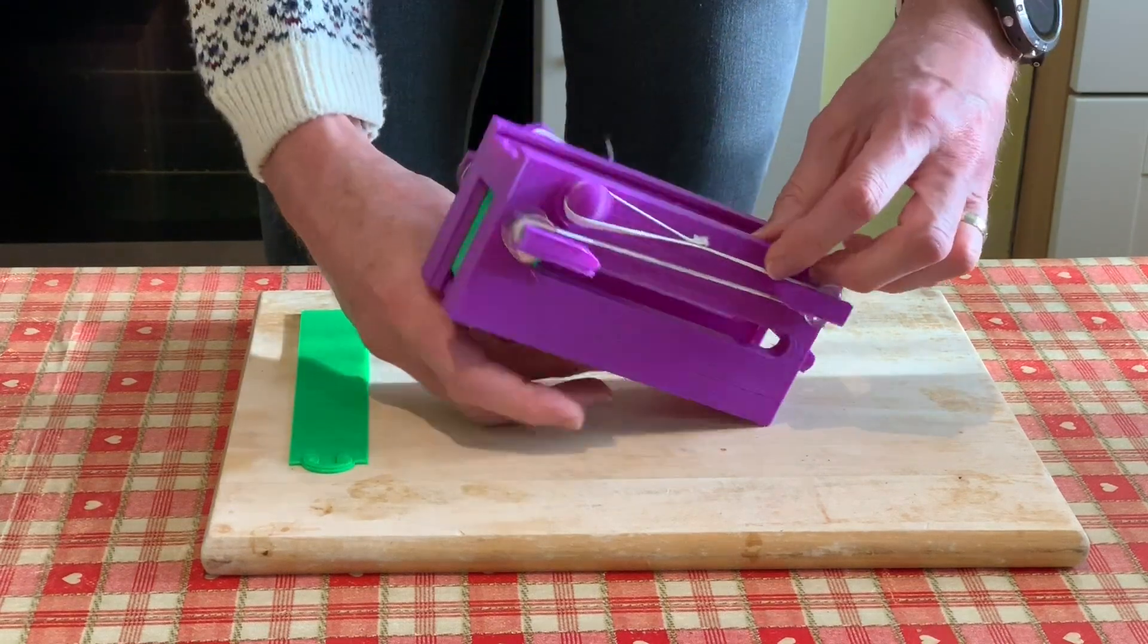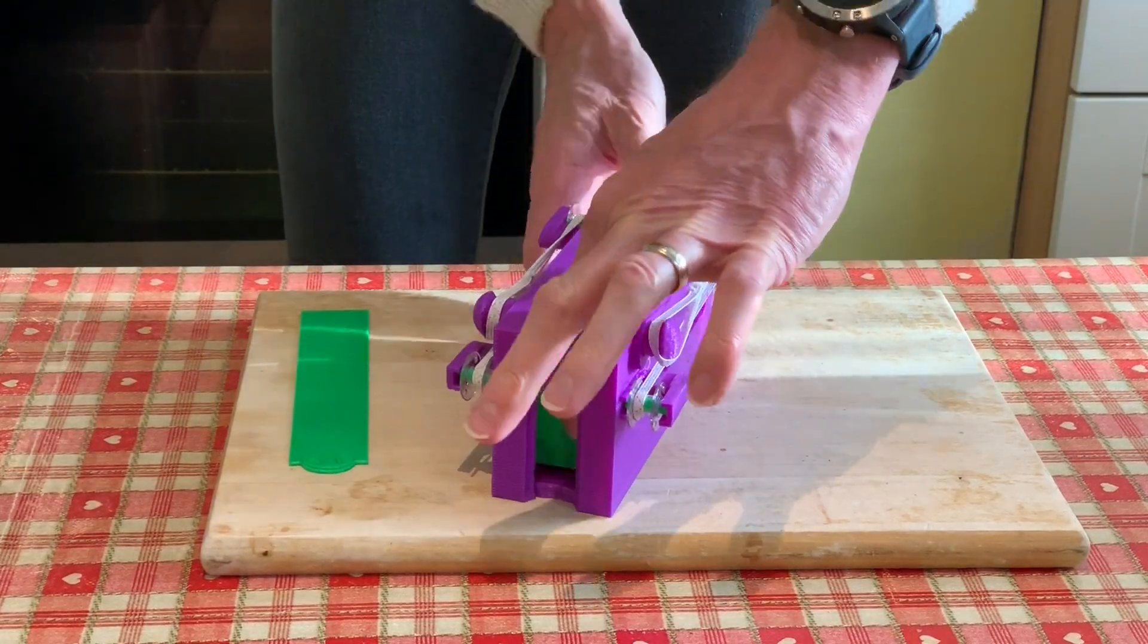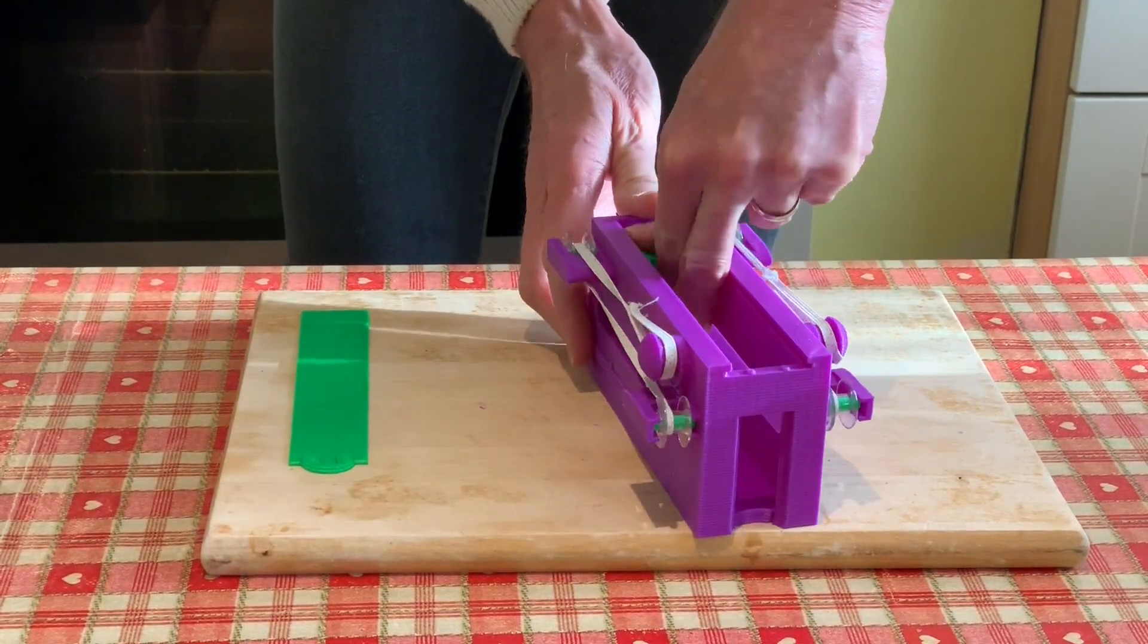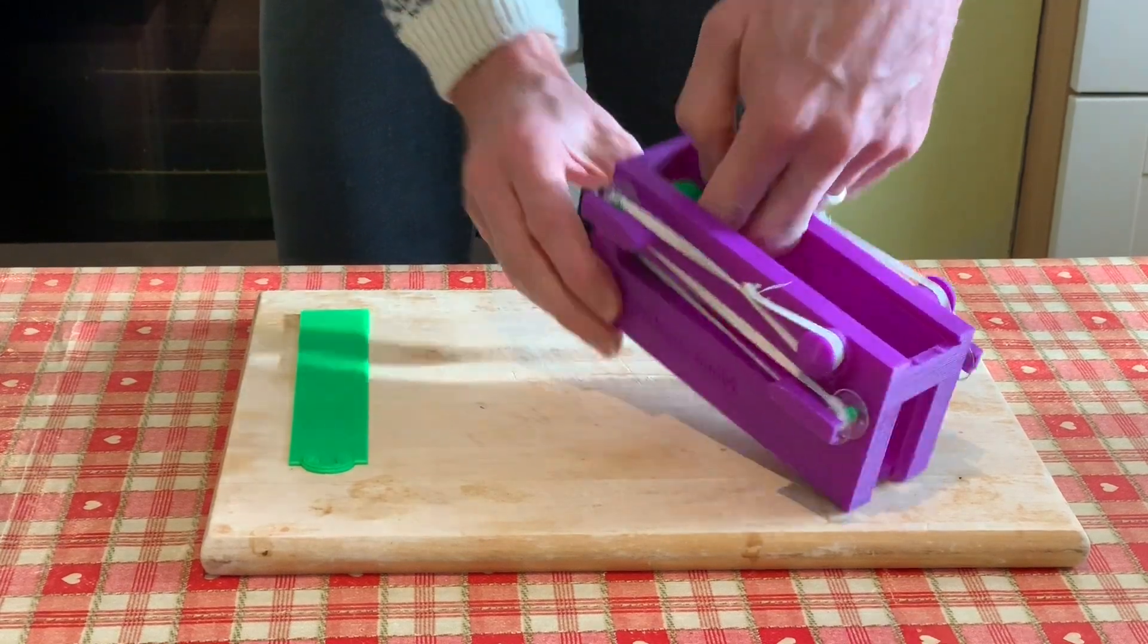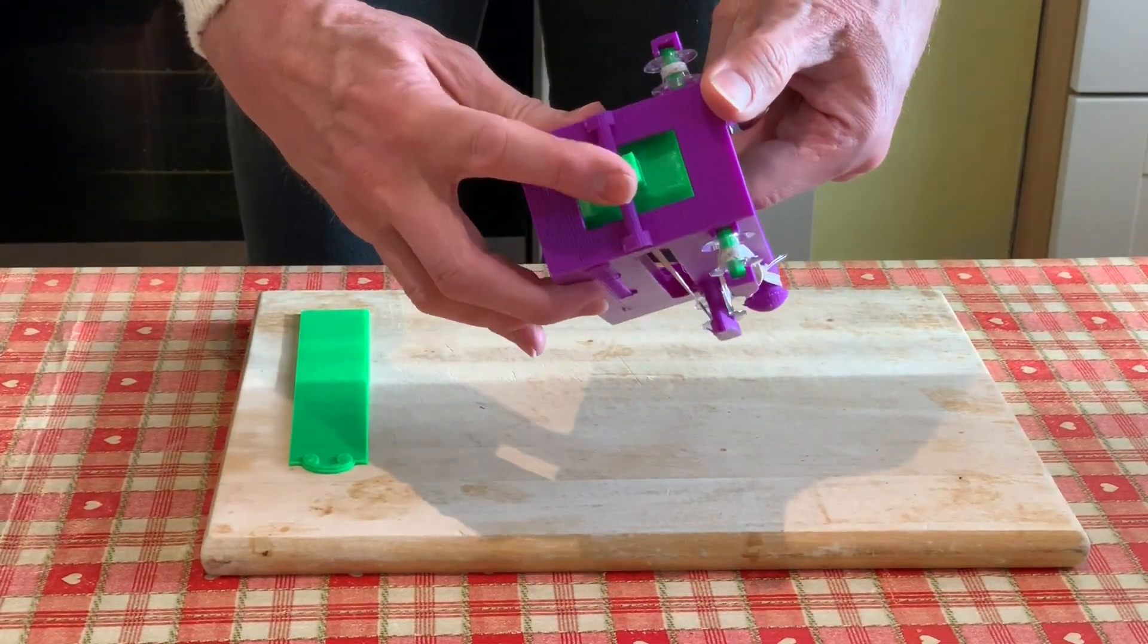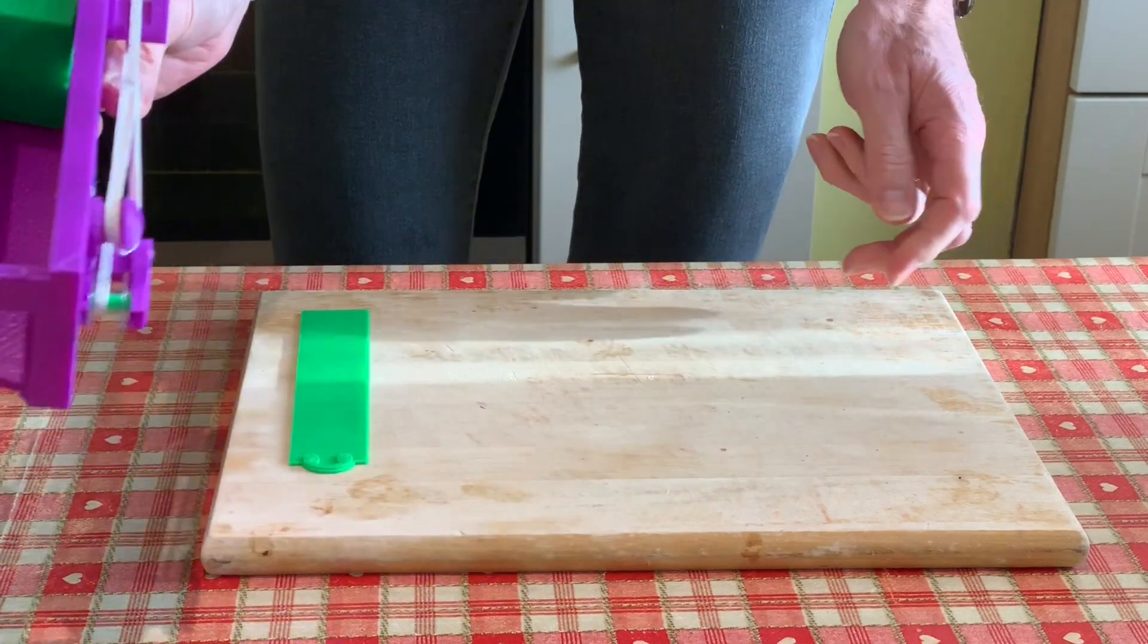To load the dispenser, you can move this block right up to the back and hook it at the back there. And now you can load tokens.